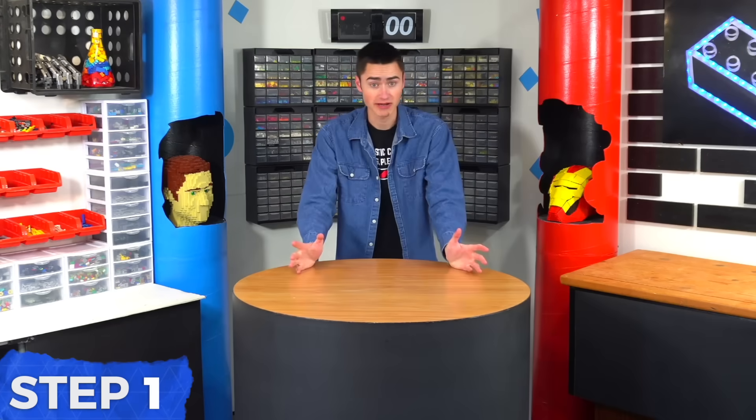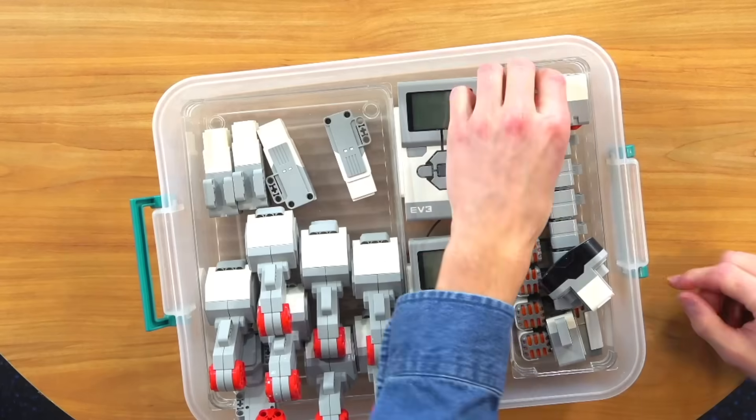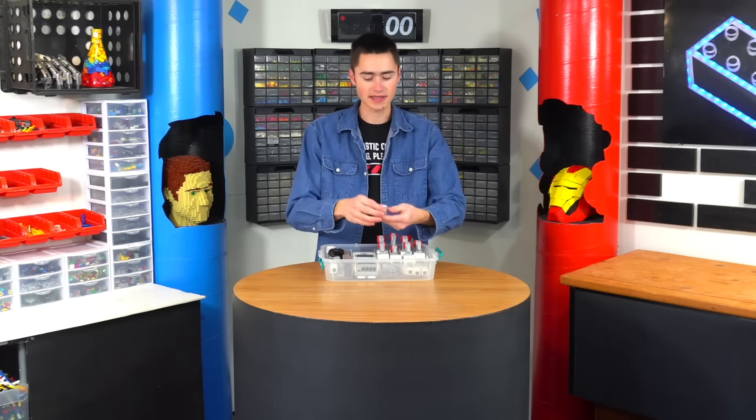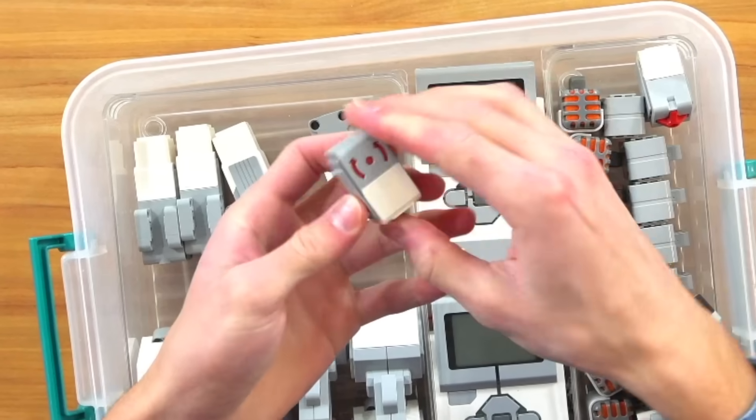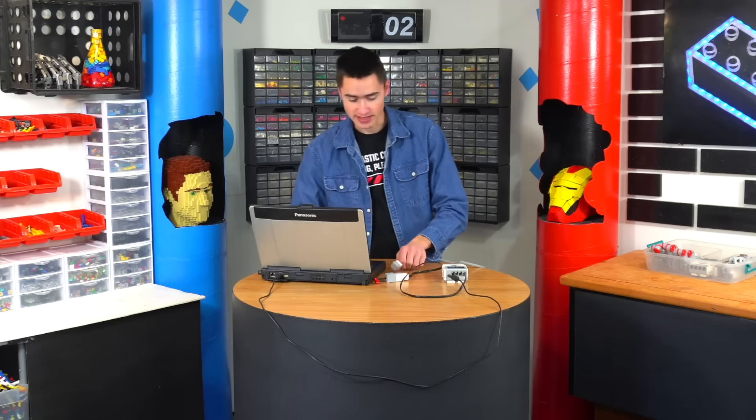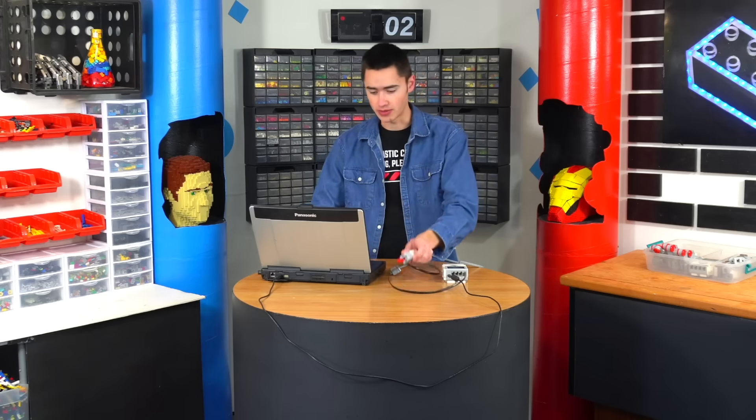So here's the plan. First, we need to grab some parts. Here's my bin of EV3 parts, and we're going to need a gyro sensor. Basically, these actually sense the degrees that it turns. So what we need to do is find the output of the gyro sensor, and then we need to take that same output and make it so that this always equals that same output.